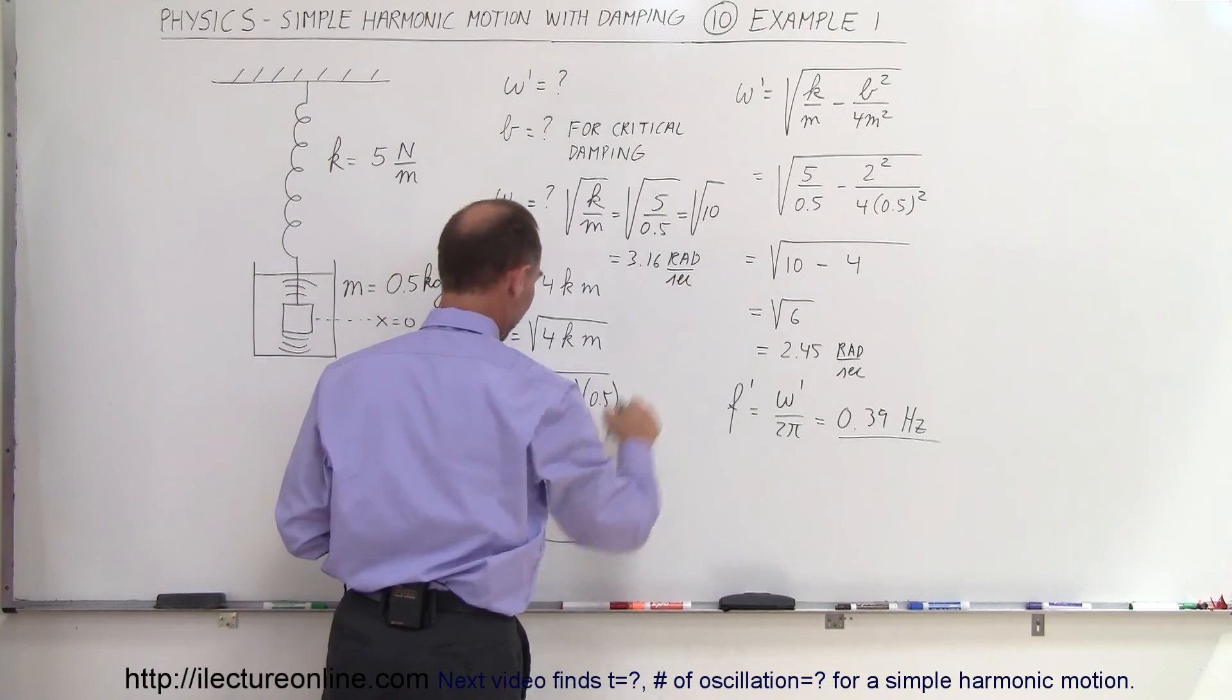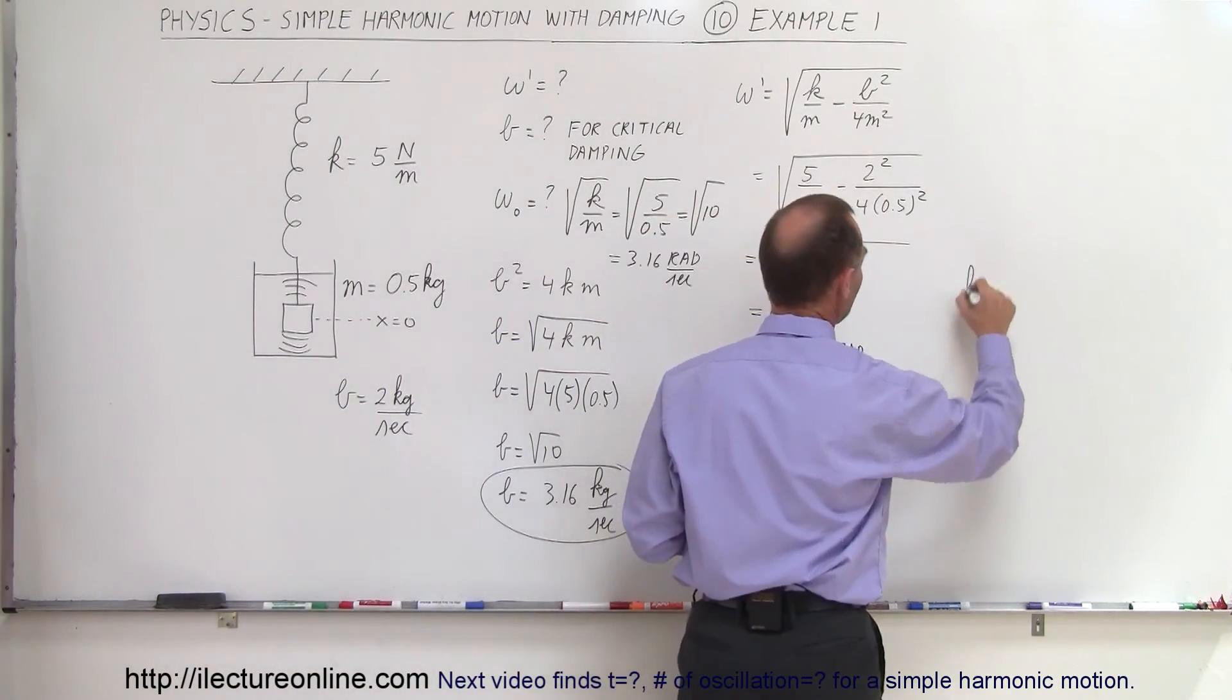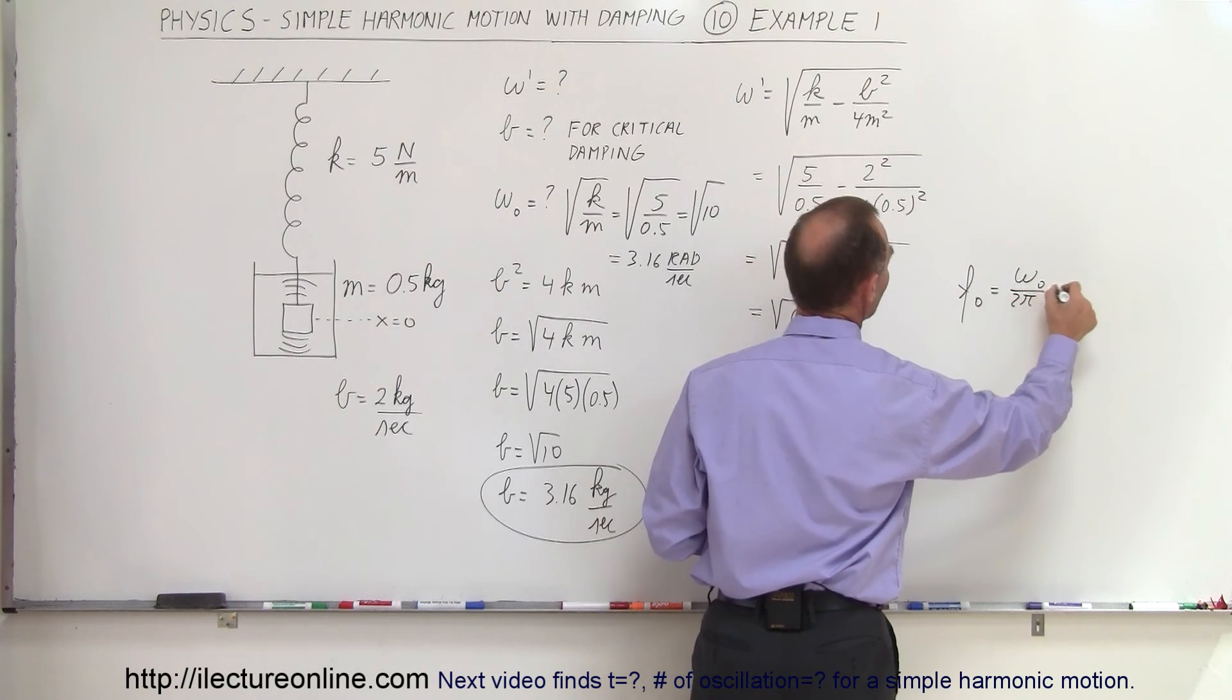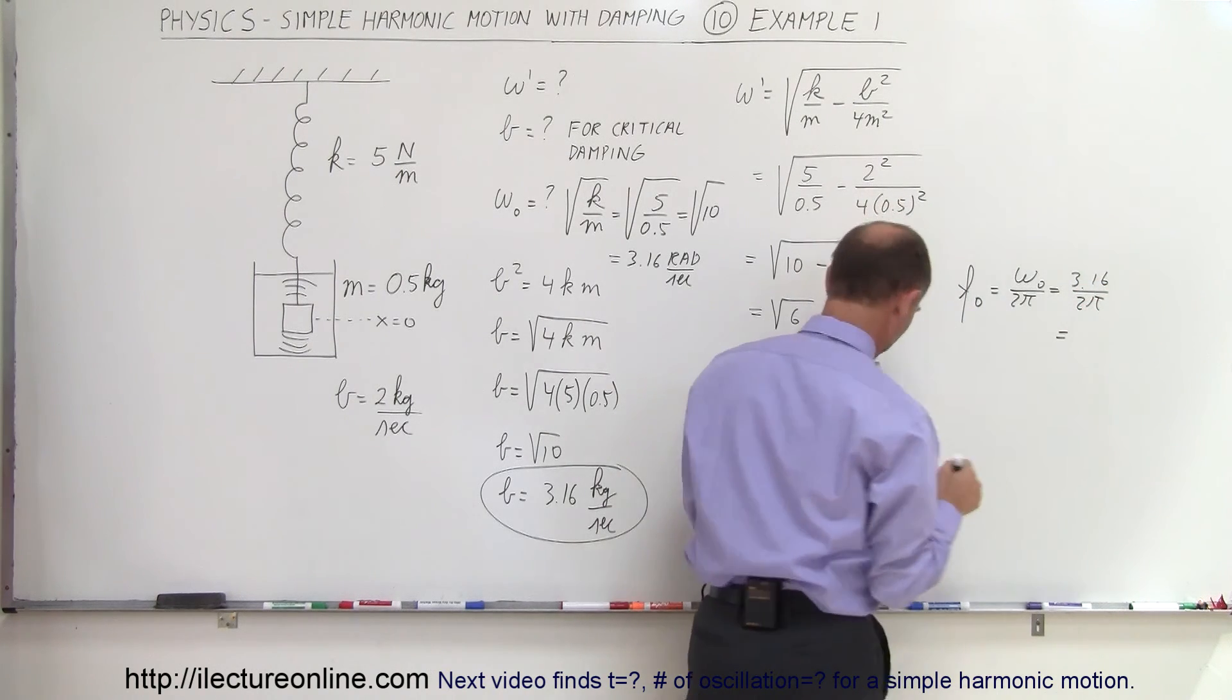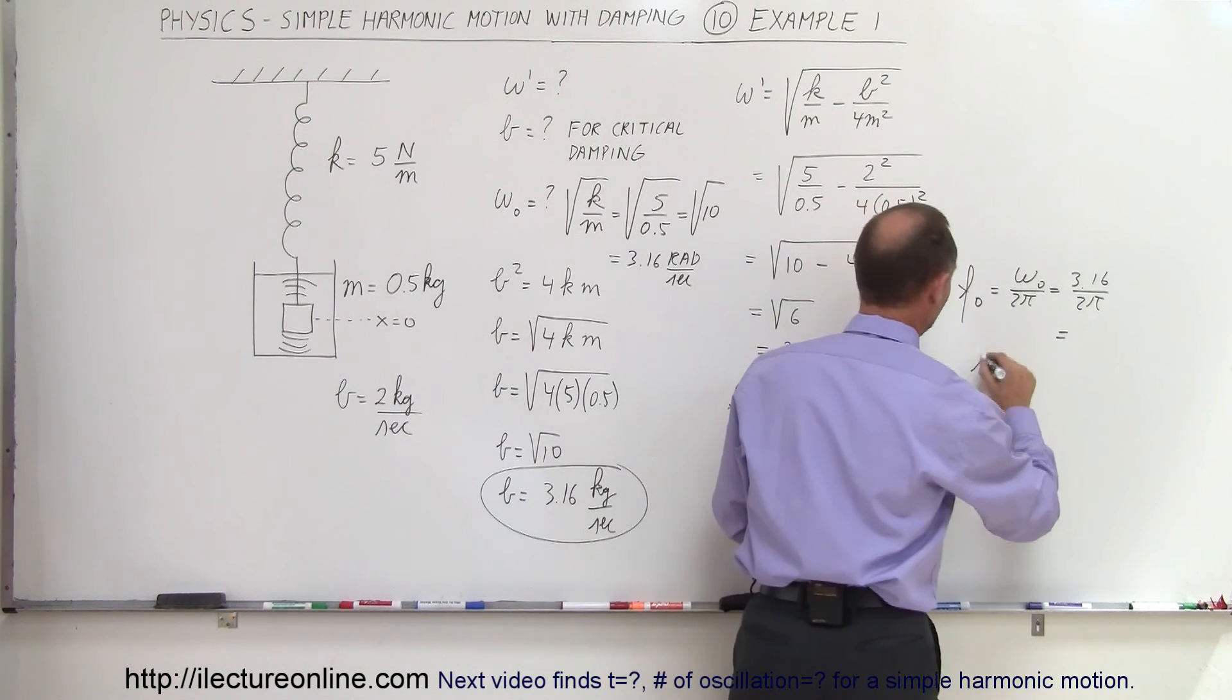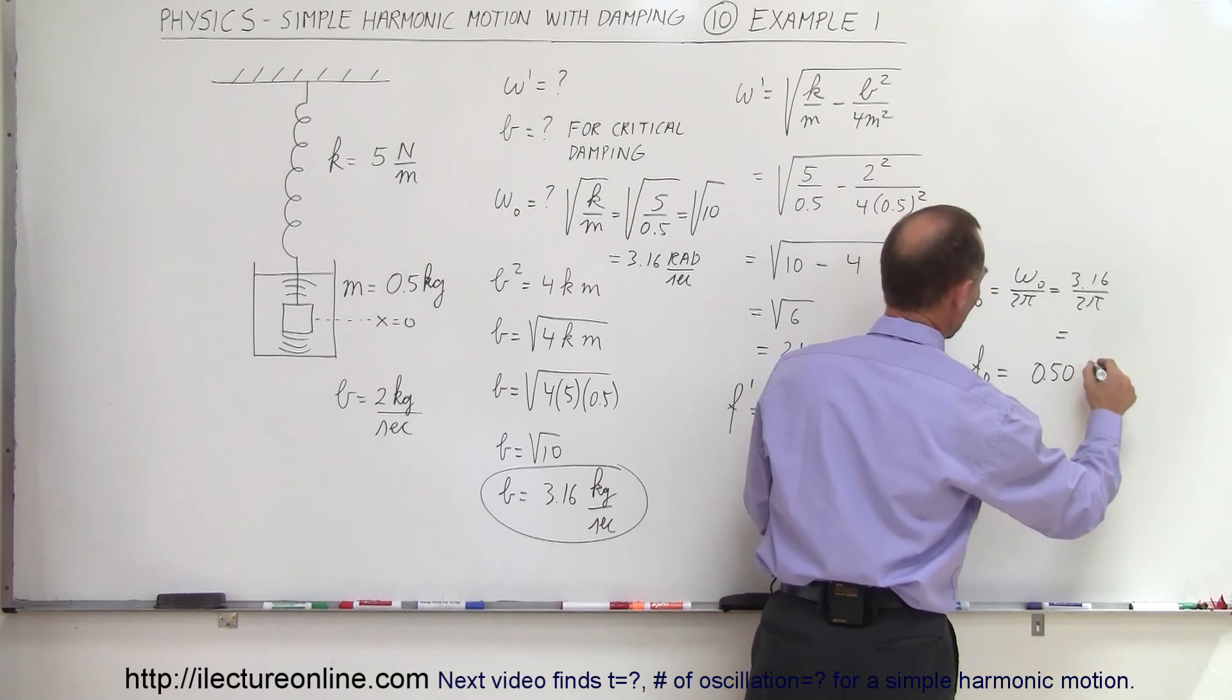Interesting that we get the same values we did over here. And of course, if we then take the frequency, like this, that's equal to omega sub nought divided by 2 pi, which is equal to 3.16 divided by 2 pi, which is equal to 2 divided by pi equals, so the frequency without damping would be 0.50 hertz.